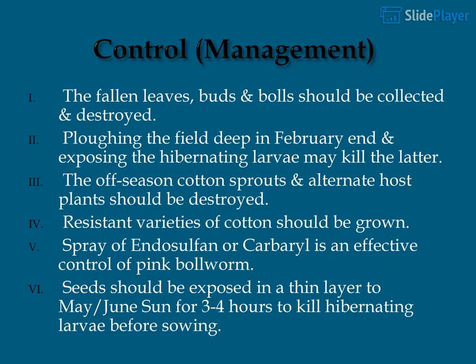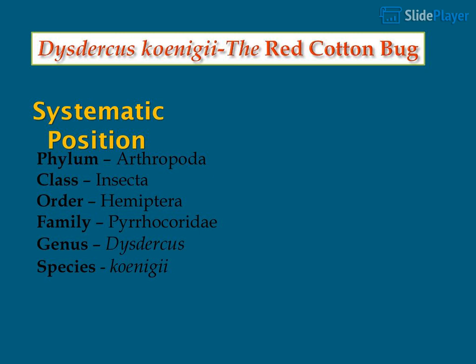Control and management: Fallen leaves, buds, and bolls should be collected and destroyed. Deep plowing in late February exposes hibernating larvae. Off-season cotton sprouts and alternate host plants should be destroyed. Resistant varieties of cotton should be grown. Spray of endosulfan or carbaryl is effective. Seeds should be exposed in a thin layer to May–June sun for 3 to 4 hours to kill hibernating larvae before sowing.